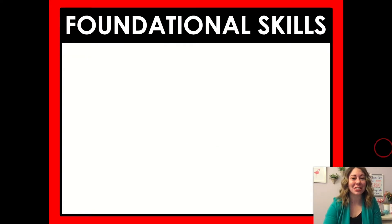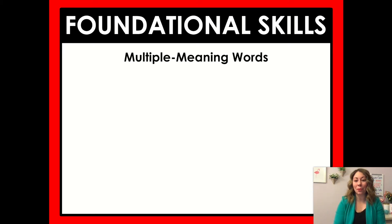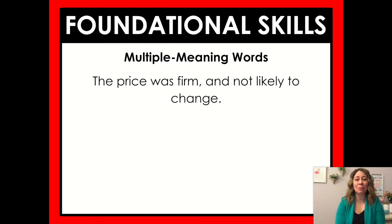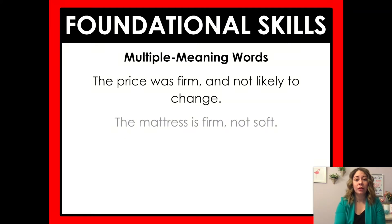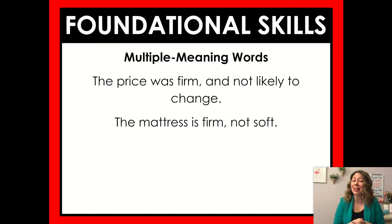So we do have our foundational skills for today and we're looking at multiple meaning words. When we think about multiple meaning words, we have a sentence like: 'The price was firm and not likely to change.' Or we could say: 'The mattress is firm, not soft.' Both of those sentences have the word 'firm' in them, but the word 'firm' has different meanings depending on the sentence.